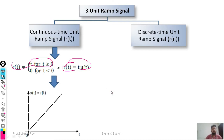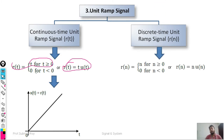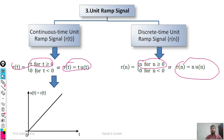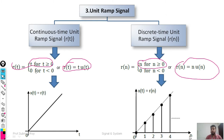The continuous time unit ramp signal r(t) is represented as a linear curve. For the discrete time unit ramp signal, it is defined as r(n) = n for n greater than or equal to zero, and 0 for n less than zero. It can also be written as r(n) = n·u(n). The discrete time ramp signal is plotted showing values 0, 1, 2, 3, 4 and so on.